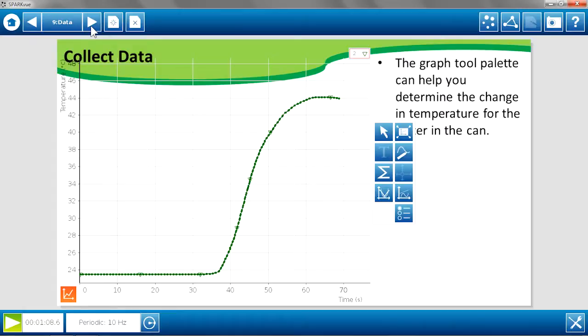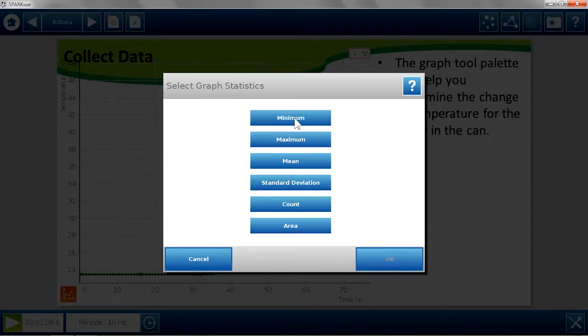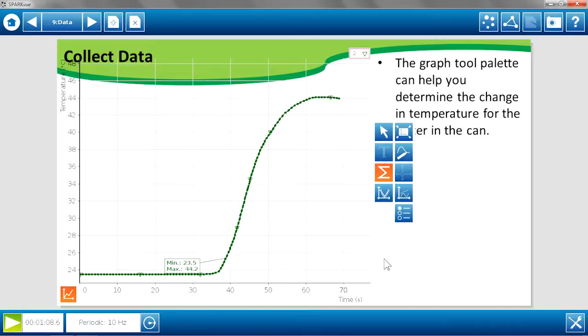So we've collected information on the mass before and after. Now we're going to look at the change in temperature of the water based on the energy that that food released. Our statistics tools of minimum and maximum be an easy way to find the difference in temperature. And that difference in temperature will be entered into a data table on the next page.